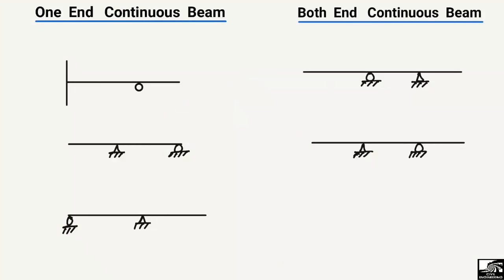Hello guys, welcome back to AC1 Engineering YouTube channel. Please subscribe our channel for daily AC1 Engineering videos. Today's lecture we are going to differentiate between the one-end continuous beam and the both-end continuous beam. I will try to explain this difference with the help of examples, which will make it easy to understand.